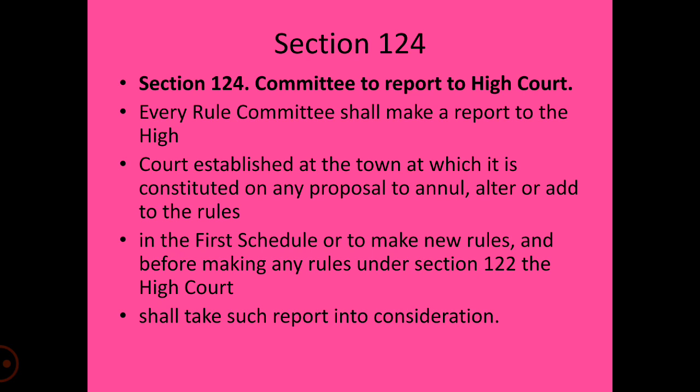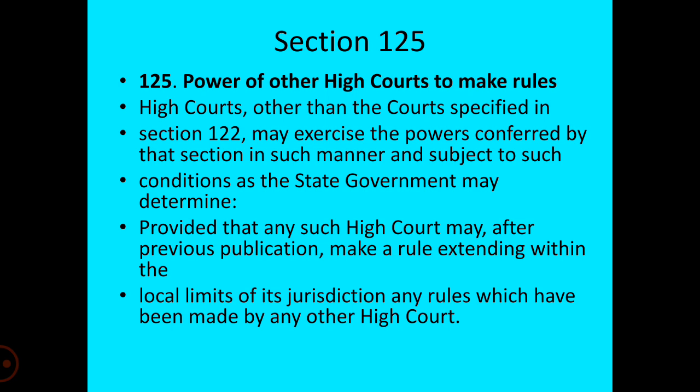Section 123 states about the constitution of a Rules Committee in certain states. Subsection 1 talks about the formulation, subsection 2 about the members forming the Rules Committee, subsection 3 talks about the nomination of a president of the Rules Committee, subsection 4 states about the appointment of a new member to the Rules Committee in case of retirement or resignation, and subsection 5 states about the appointment of a secretary to the Rules Committee.